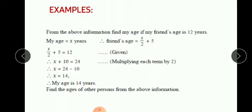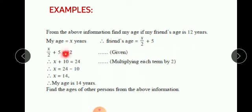Now let's see the above example which we solved. The above information is given in the boxes and it is asked: find my age if friend's age is 12 years. If my age is x years, your friend's age will be x upon 2 plus 5, as written in that box. So we will solve: x upon 2 plus 5 is equal to 12, because friend's age is 12 years.